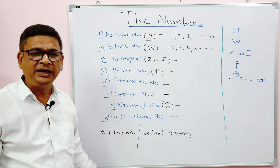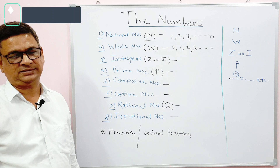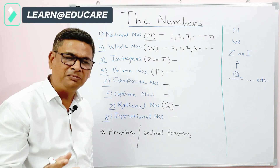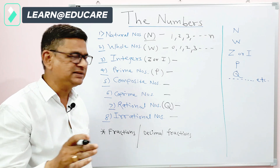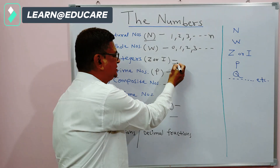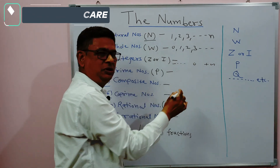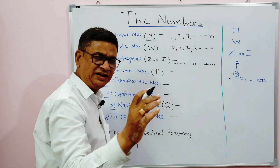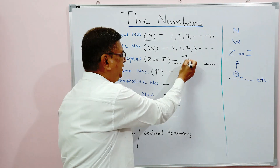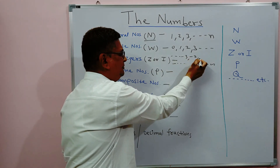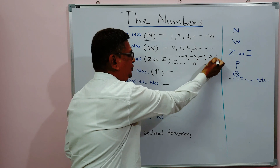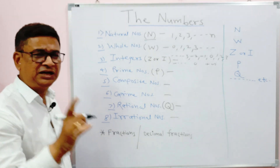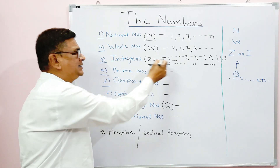Next are integers — all positive and negative numbers, that is, from minus infinity to plus infinity through zero. On the number line they appear as: ...minus 3, minus 2, minus 1, 0, 1, 2, 3... The integer number set is denoted by either Z or I.